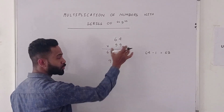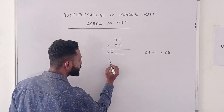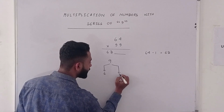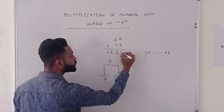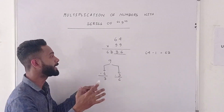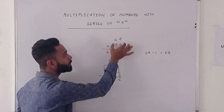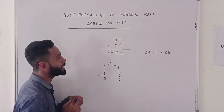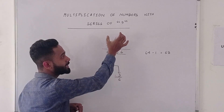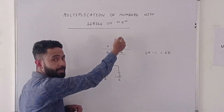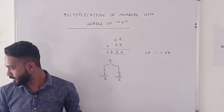We subtract to find the remaining digits. 9 minus 6 would be 3, and 9 minus 3 would be 6. That is what we are going to learn in this video. Let's see how it is done.